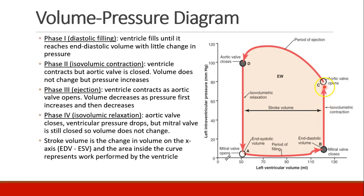Pressure continues increasing until the aortic valve finally opens. At that point, pressure still increases but blood is now ejecting out of the heart, and ventricular volume decreases as blood leaves through the aortic valve. This continues until the aortic valve closes at the end of systole. Now we are in diastole — with the aortic valve closed and the mitral valve still closed, pressures rapidly drop in the left ventricle. The left ventricle is relaxing, but no blood is able to come in yet. This is iso-volumic relaxation, where volume doesn't change but pressures drop, continuing until pressures become low enough that the mitral valve can open.